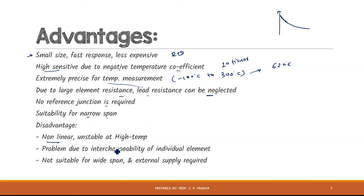Problem due to interchangeability of individual elements. So this is one of the advantage of thermistor. Then it is not suitable for a wide span measurement, and external supply is always required, which makes it a passive transducer. You will always need external power supply to get the actual temperature reading from thermistor.